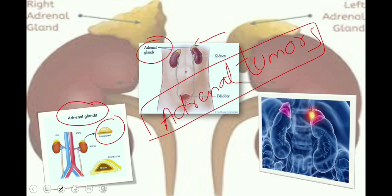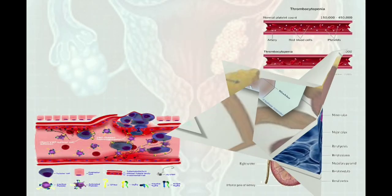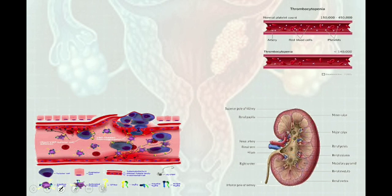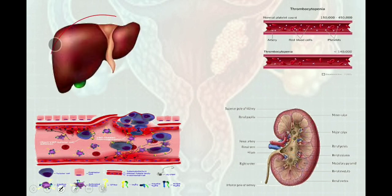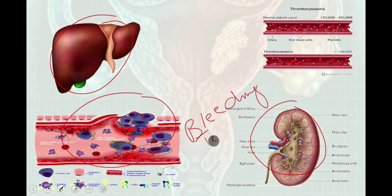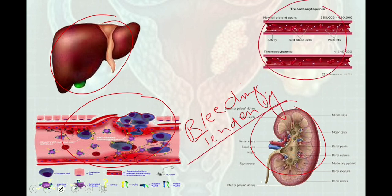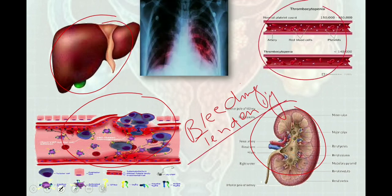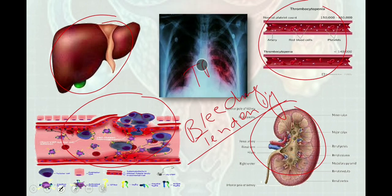We need to ask questions to rule out the possibility of hepatic and renal diseases. Bleeding diseases like von Willebrand disease and hemophilia are very important causes of abnormal uterine bleeding, so ask about tendency of bleeding and clot formation in different parts of the body. Also ask about coagulopathy, thrombocytopenia, and tuberculosis or history of contact with TB.